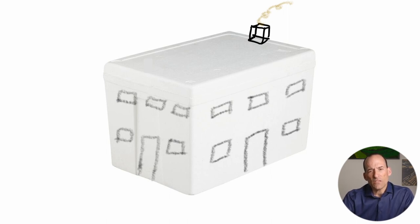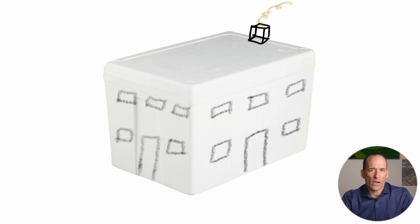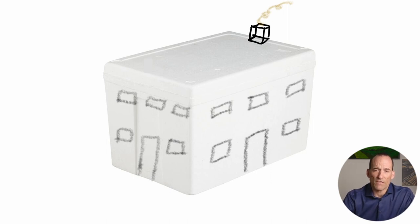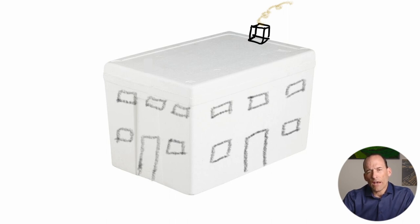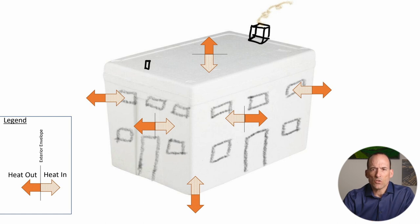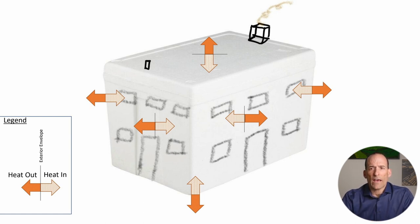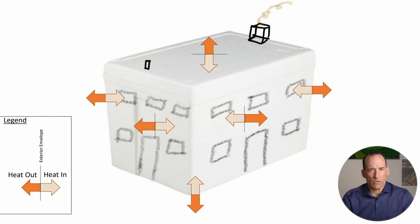In this visual, the styrofoam represents the exterior envelope of your house. It has floors and walls and a roof. It has doors and windows and maybe some skylights, vents, and chimneys — kind of everything you would see in a normal house. If we look at the exterior of that house, we can see there's heat coming in and out through each of the six surfaces, and those surfaces make up the exterior envelope.